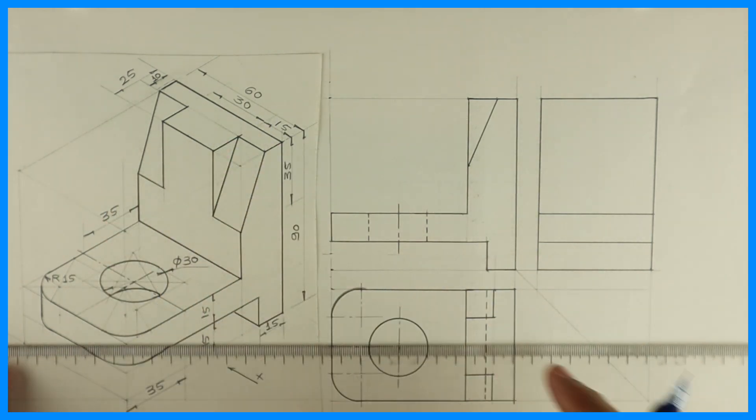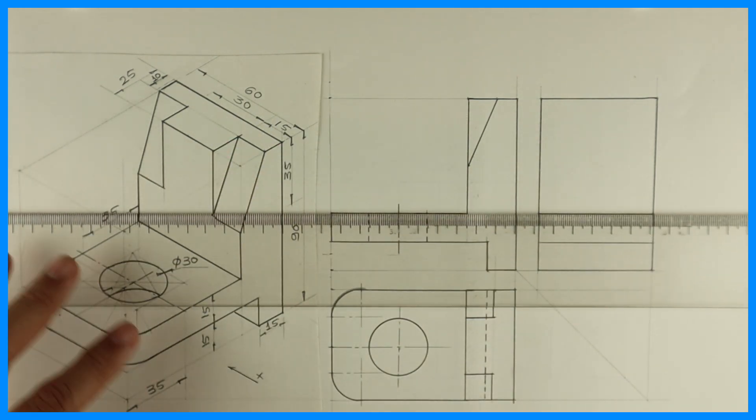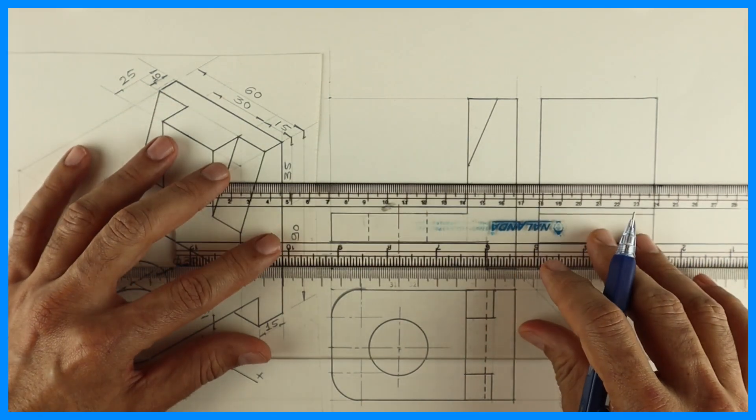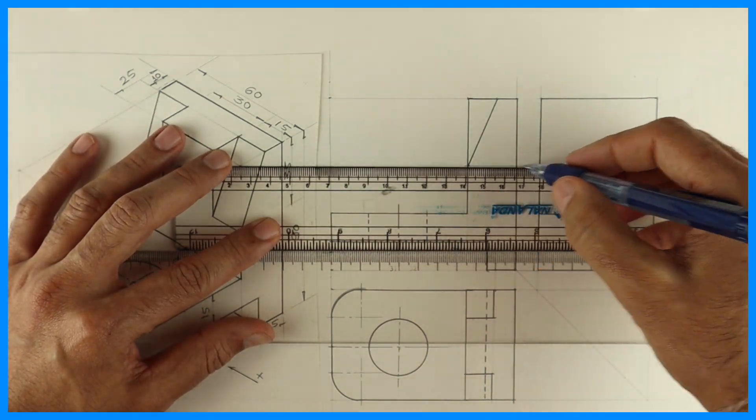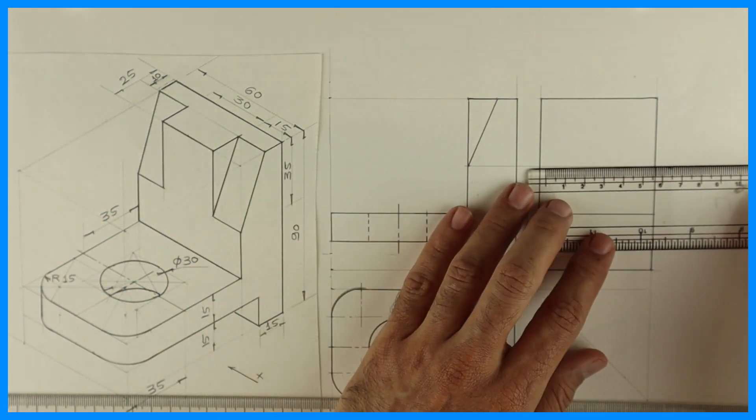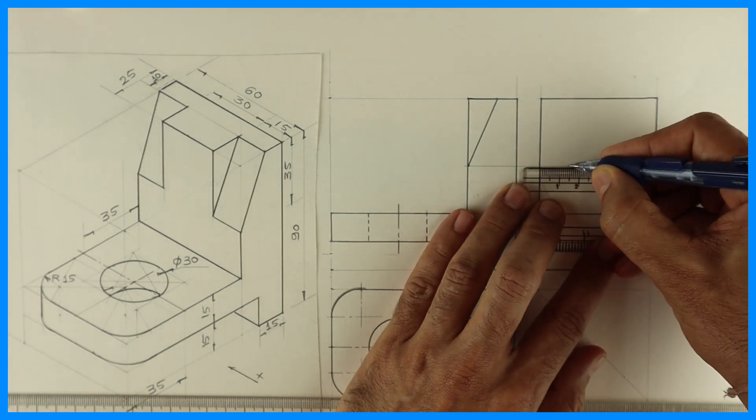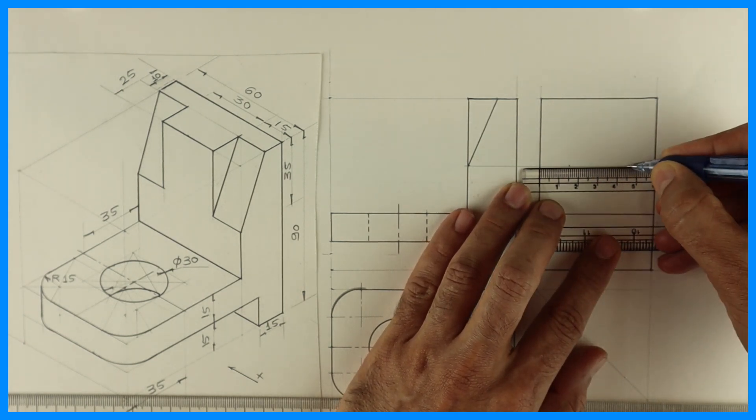Now see this part, this T portion. This T portion, so we'll project from here. Again we'll mark 15, 30, 15, or we can project from top view. Whatever you like.